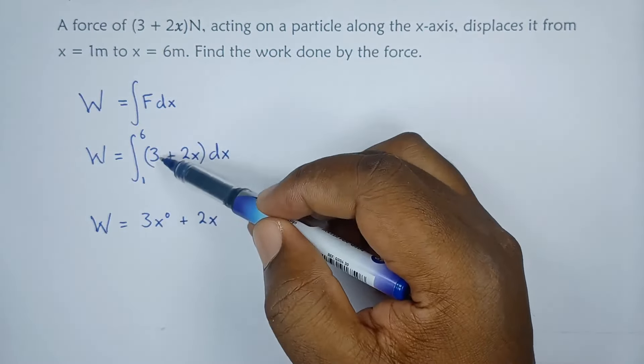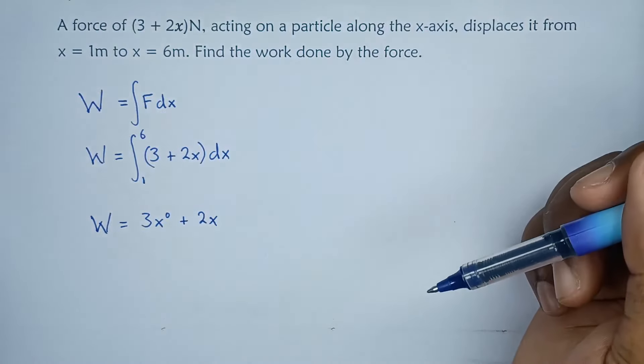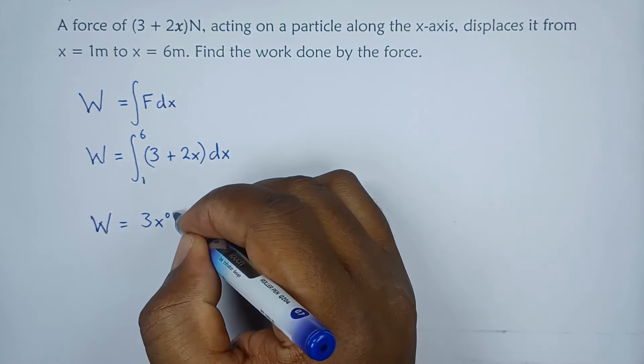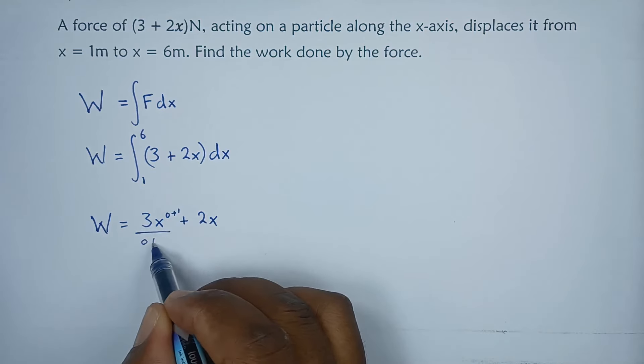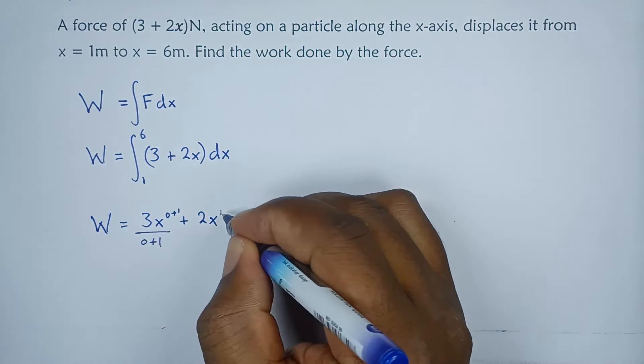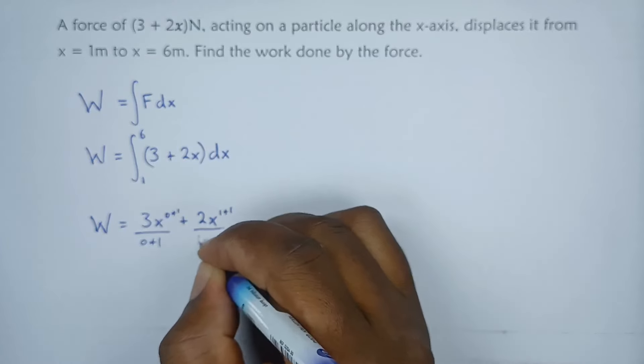The process of integration simply says to the power of x add one, and whatever we get as a new power should go in the denominator. Here there's a power one, so add one to that power. The new power should go in the denominator like that.